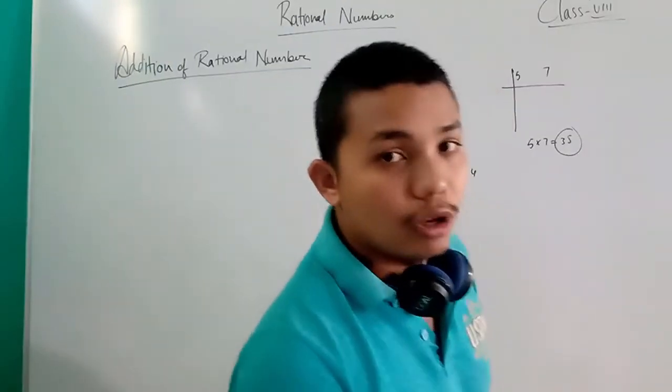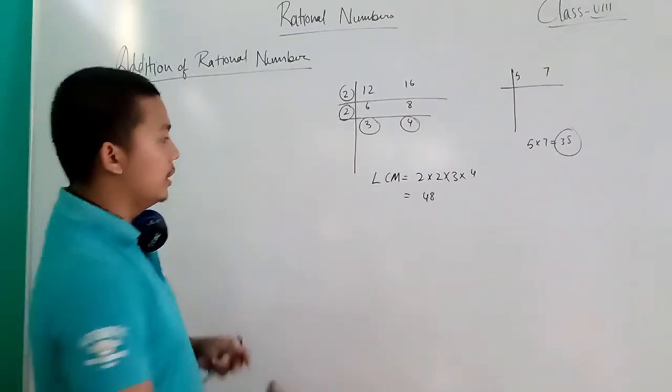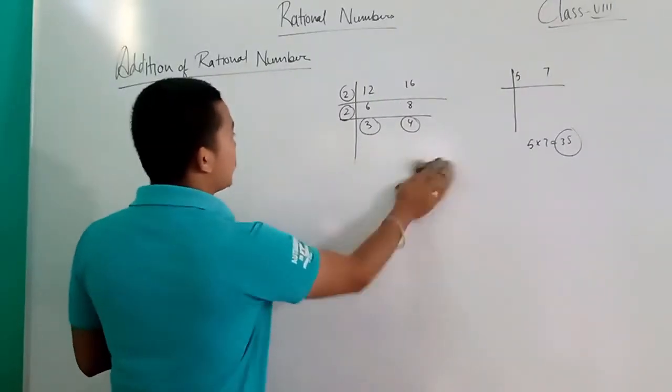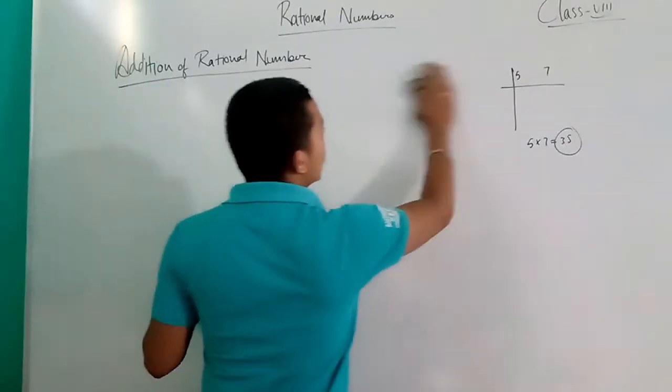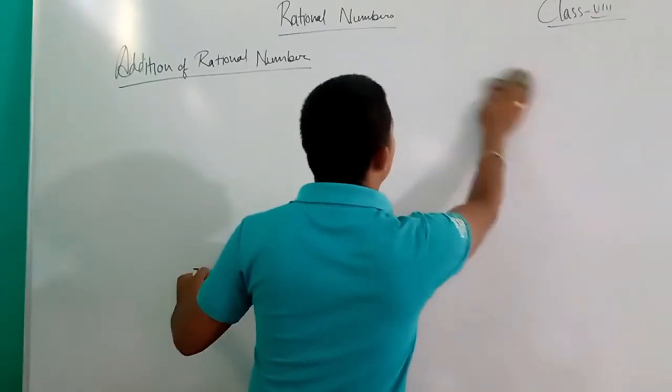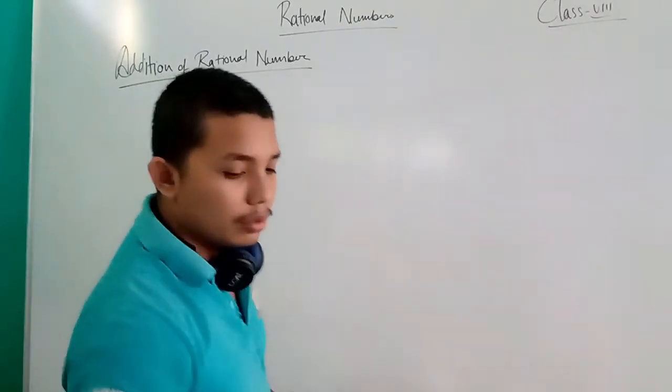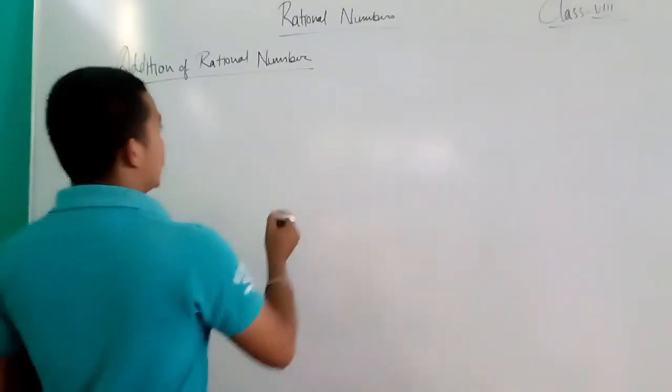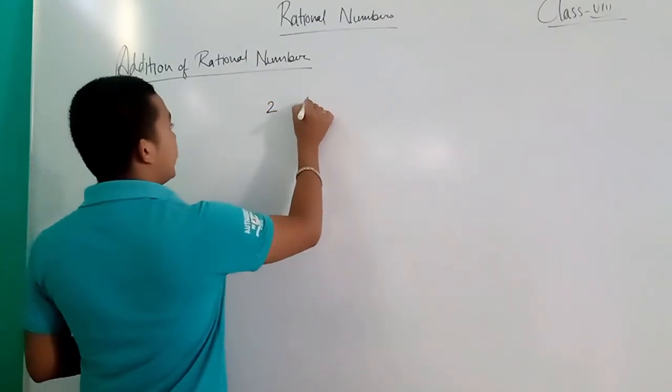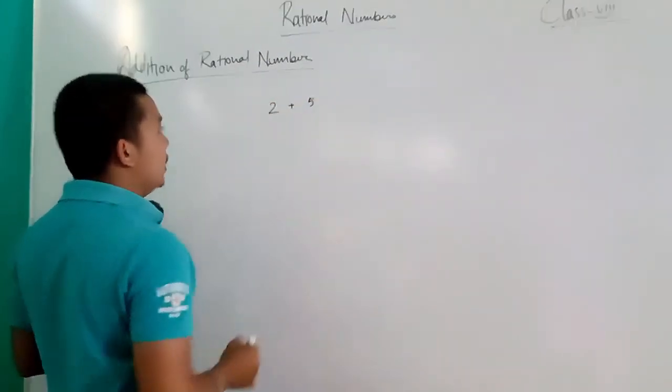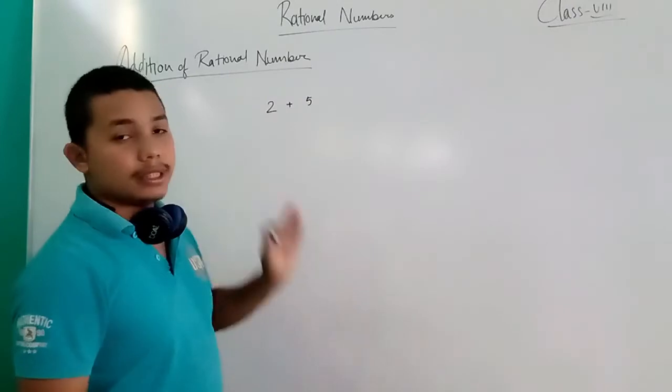Addition of two rational numbers. Simple: 2/5, simply 5 plus 2 is 7.